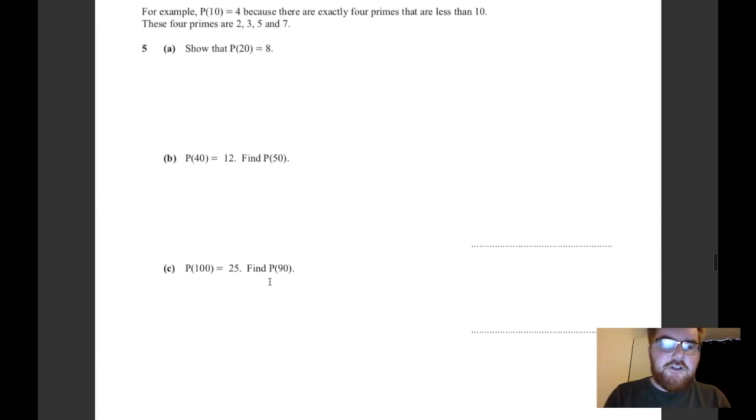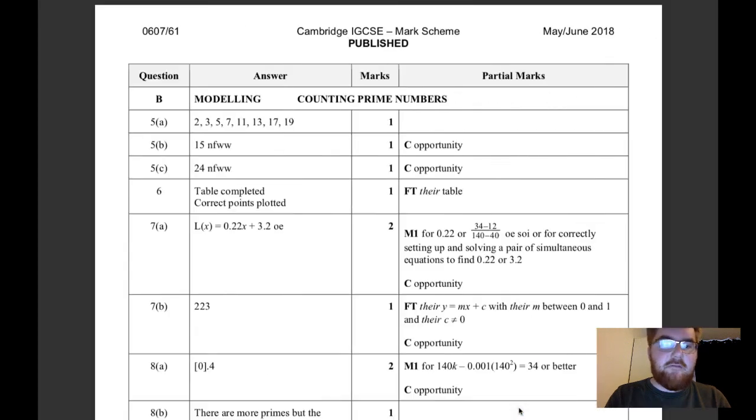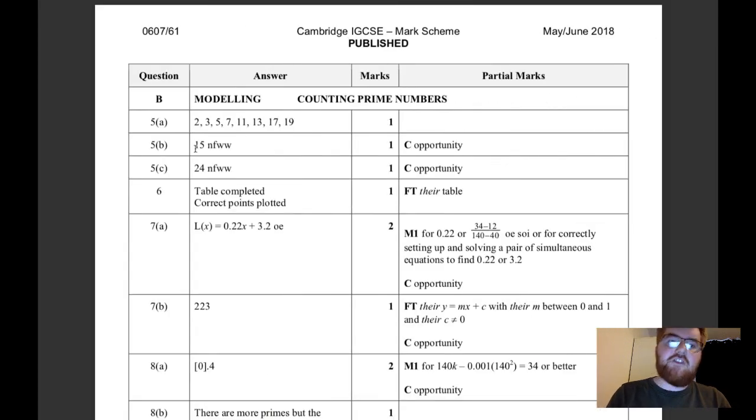With this question, P(40) is 12, find P(50). You're already told that 12 primes are less than 40, so you just need to find the extra primes between 40 and 50. Well, 41 is prime, 43 is prime, 47 is prime, so the answer is 15 because you're adding on an extra three primes.